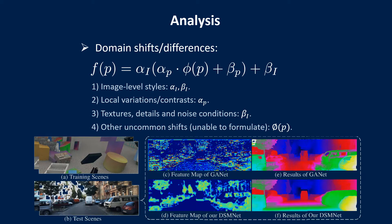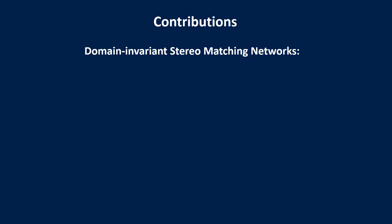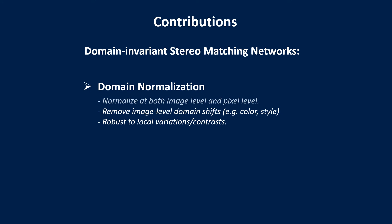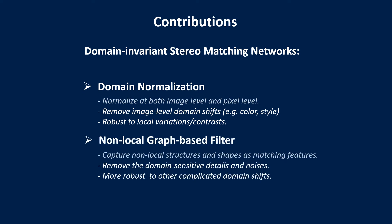When training on the synthetic SceneFlow dataset and testing on the real KITTI dataset, the learned features will have many noise and artifacts caused by domain differences between synthetic and real data. These artifacts in the feature maps lead to erroneous matching results. To address domain shift challenges, we develop our Domain and Variant Stereo Matching Networks (DSMNet), which includes an end-to-end learnable domain normalization layer that can normalize at both image level and pixel level, and a non-local graph-based filtering layer that can capture non-local structure and shape as matching features.